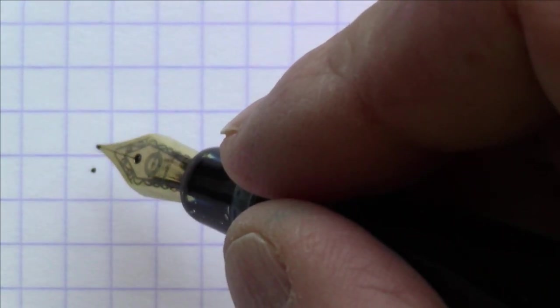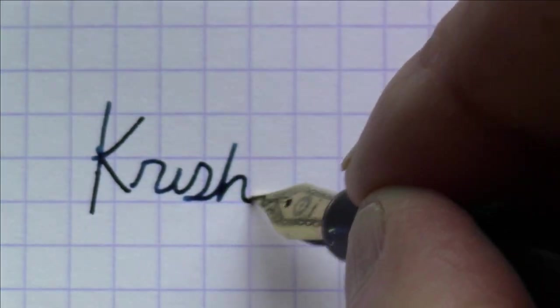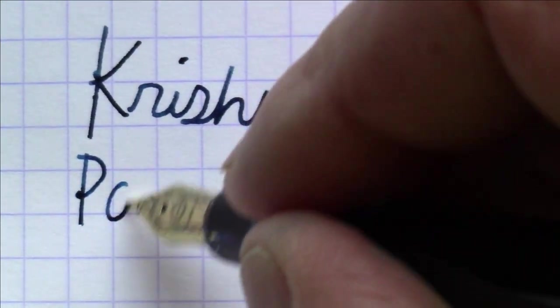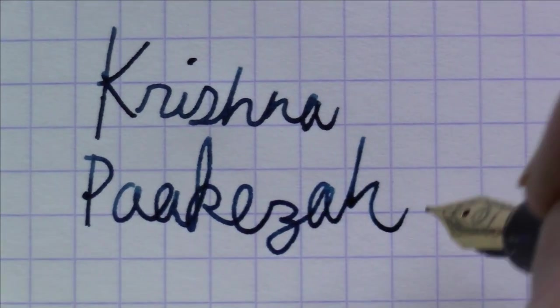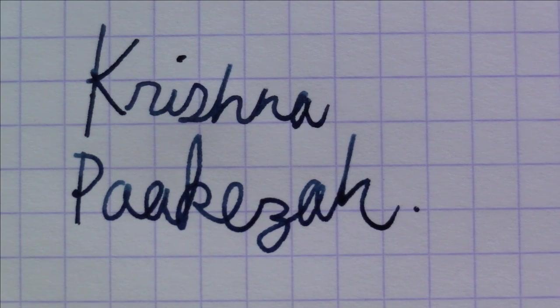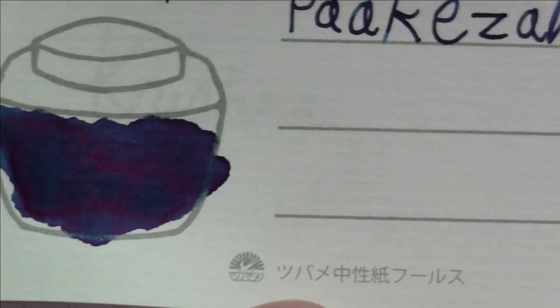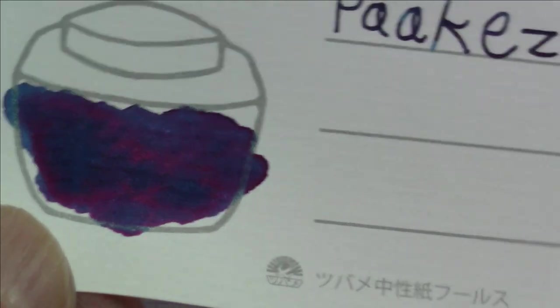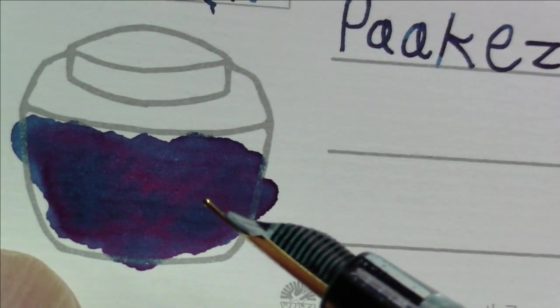Okay. This ink, as we said, is Krishna Pakiza. That's P-A-A-K-E-Z-A-H. Pakiza. So here's the swatch on this ink looks like. And as you can see, what we're talking about is a deep, deep sort of aqua blue with some sheen to it. Really nice.